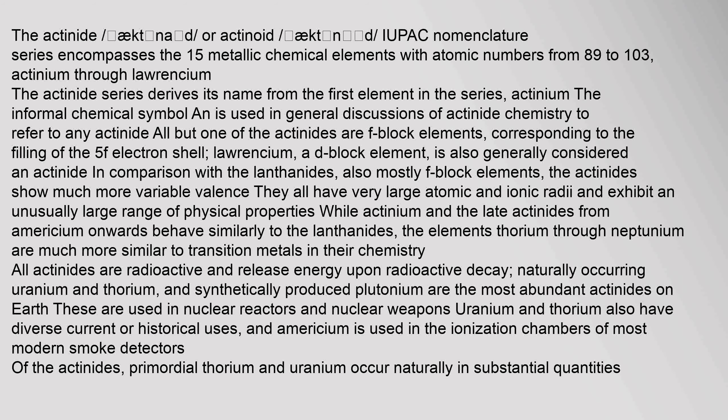Actinium through Lawrencium. The actinide series derives its name from the first element in the series, Actinium. The informal chemical symbol An is used in general discussions of actinide chemistry to refer to any actinide. All but one of the actinides are F-block elements, corresponding to the filling of the 5F electron shell. Lawrencium, a D-block element, is also generally considered an actinide.